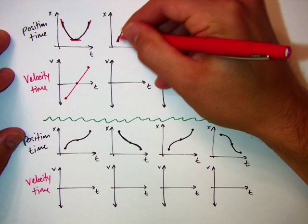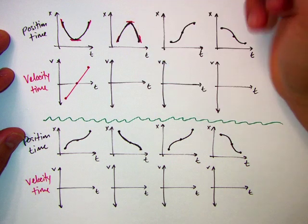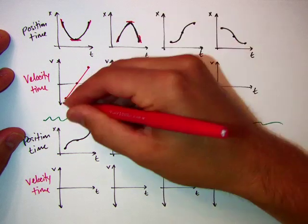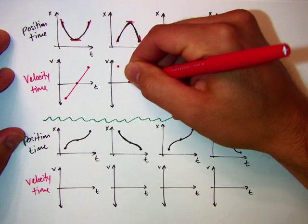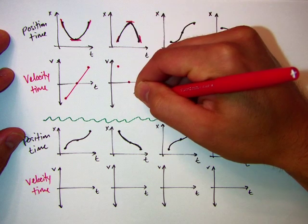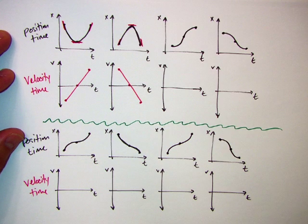In this one, I start positive, I decrease to flat, to zero, and then I get more negative. So instead of increasing, I'm starting positive. Here I'm at a velocity of zero, and I'm decreasing, I'm getting more negative. So I'm going to be downward sloping like that.